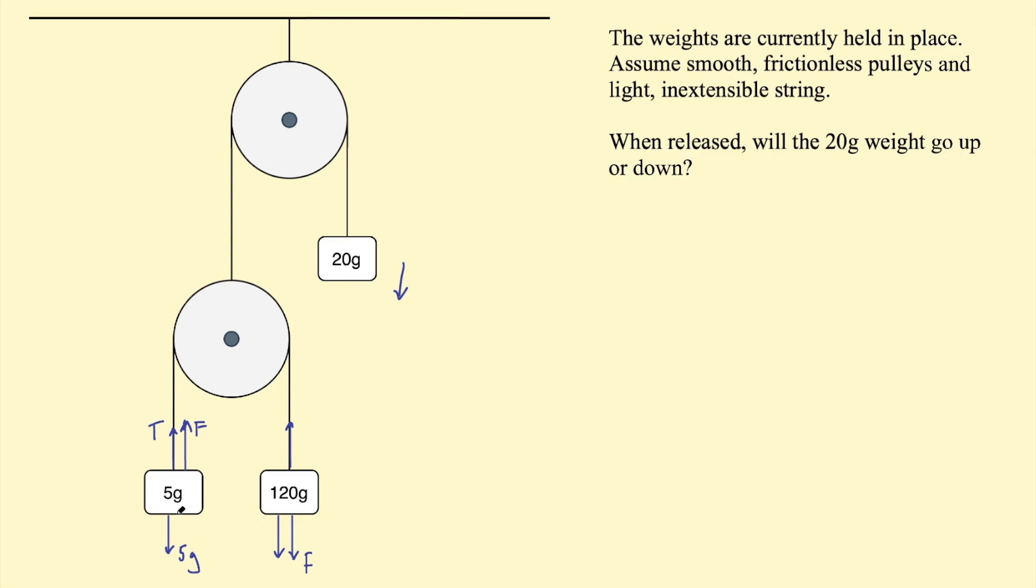Not meaning grams, meaning G. Okay, then this is the same as the tension force over here, and this is 120 G. So looking at the 5 gram weight, this net force, F, will equal the tension pulling up in the direction of movement, subtract the weight pulling down. So 5 G.